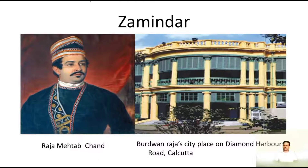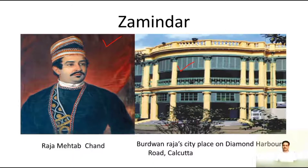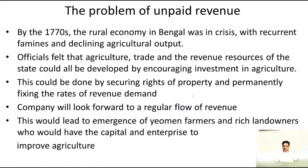You can see that this is Zamindar Mehtab Jan, who was the Zamindar of Burdwan at that time, and this is the palace or mahal of that Zamindar where he used to reside. He lived a very luxurious life, had a grand palace, and controlled a large estate of land from where he collected revenue. The Zamindar used to be a very powerful figure in Bengal.